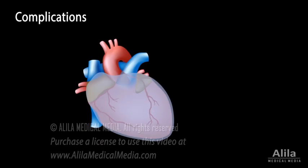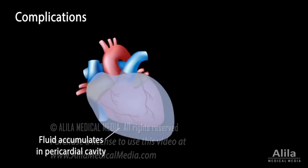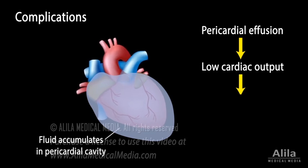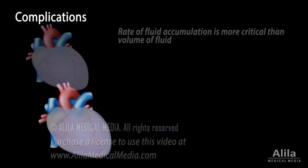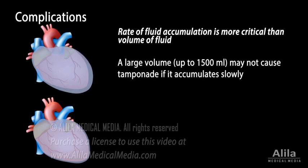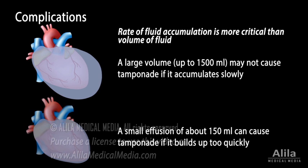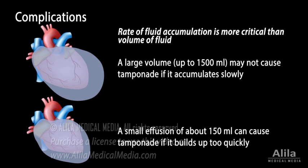Inflammation of the pericardium can cause fluid to accumulate in the pericardial cavity. This is called pericardial effusion. The increased fluid volume may limit cardiac filling, leading to low cardiac output and sometimes life-threatening circulatory shock, known as cardiac tamponade. The rate at which fluid accumulates is often more critical than the volume of fluid. Slow accumulation of a large volume may not cause tamponade, but a relatively small effusion can do so if it builds up too rapidly, because the pericardium cannot stretch quickly enough to accommodate it.